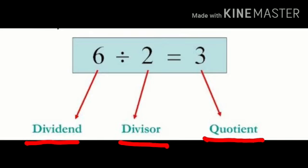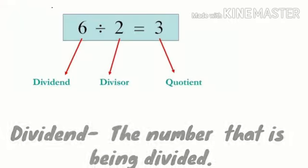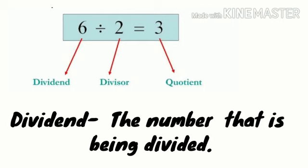So now we are going to learn what is a dividend, what is a divisor and what is a quotient. So first is dividend. The number that is being divided. Here which number is being divided? Yes 6.